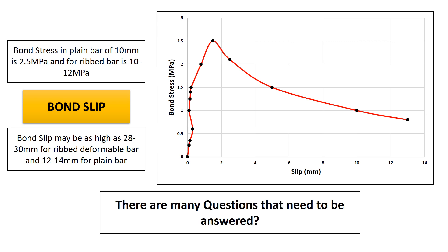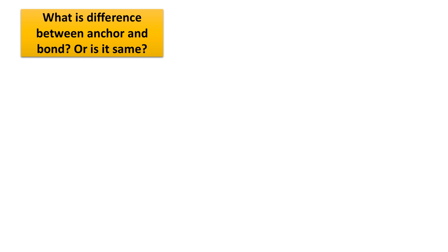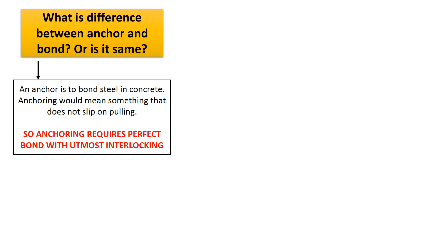There are many more questions to address. First, what is the difference between anchor and bond — or are they the same? A simple answer is that an anchor is nothing different from bonding steel in concrete. A proper anchor would mean something that does not split on pulling, so anchoring requires a perfect bond with utmost interlocking. This could be achieved by providing grips, fastening, and increasing the length of contact between steel and concrete.